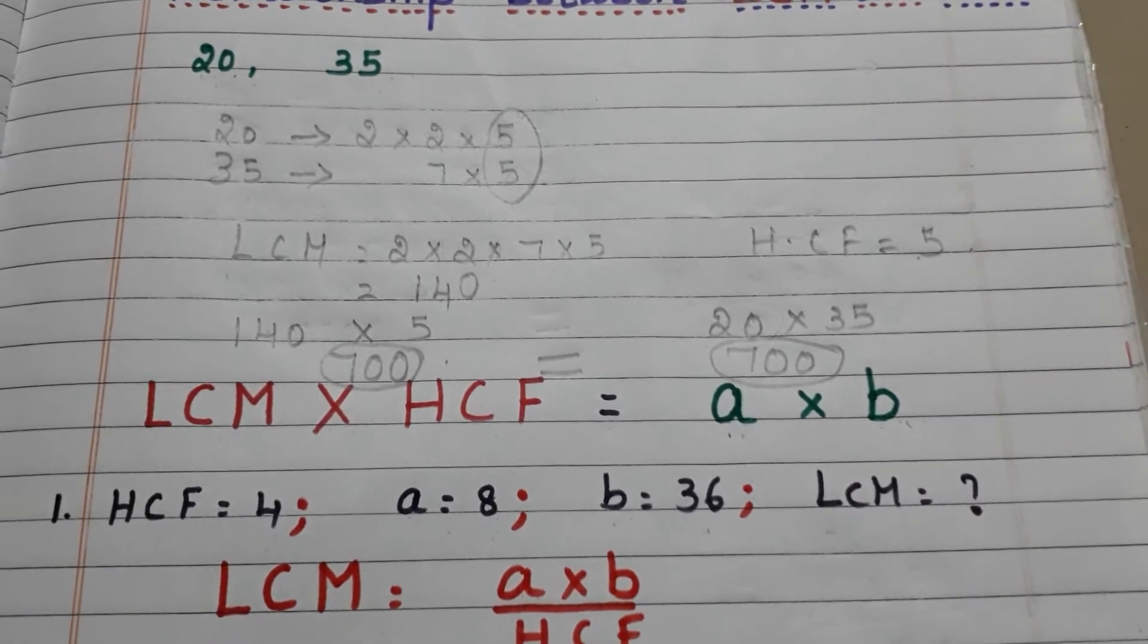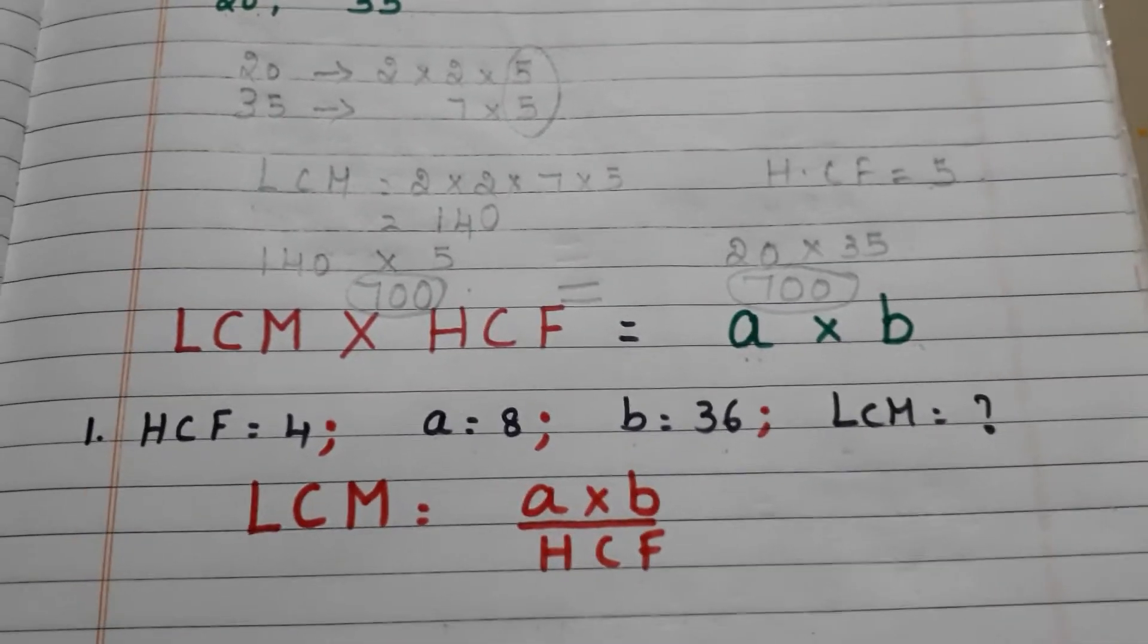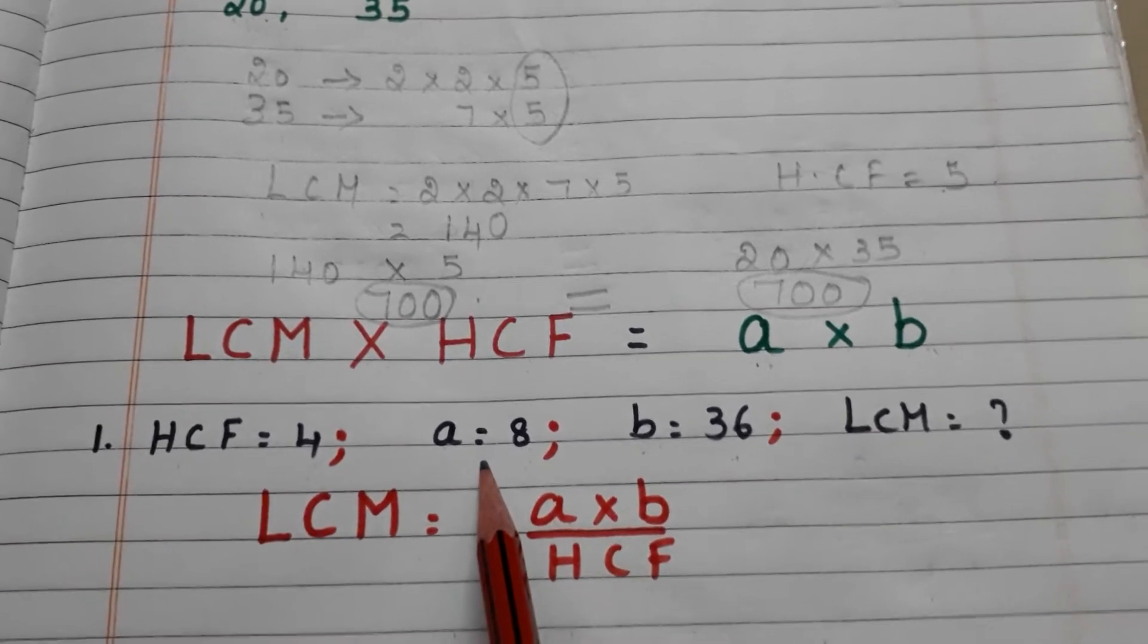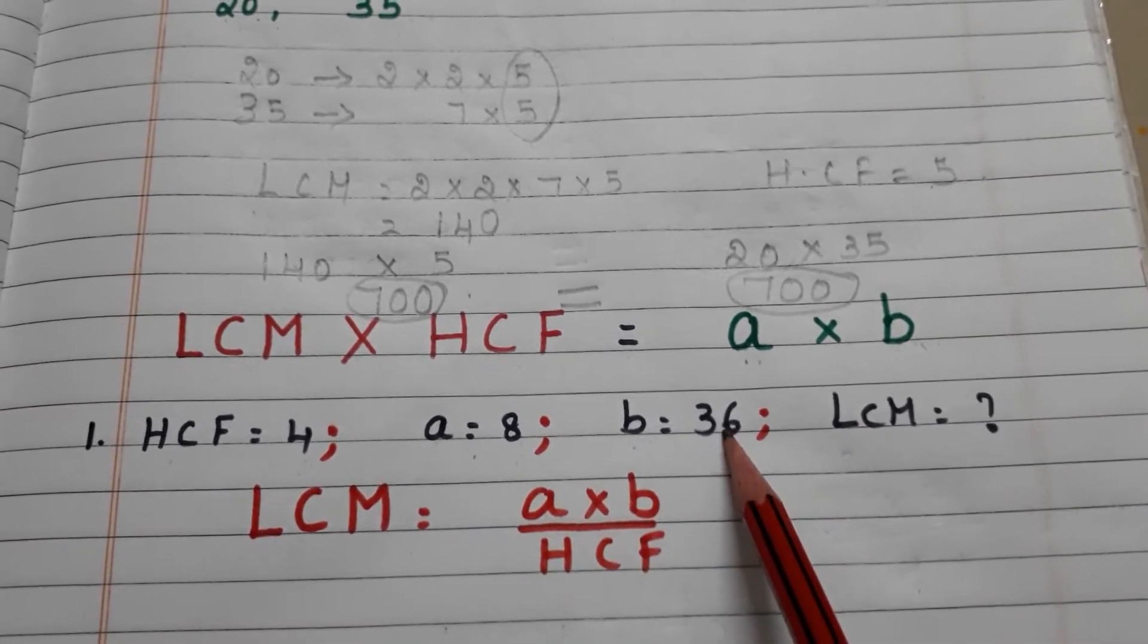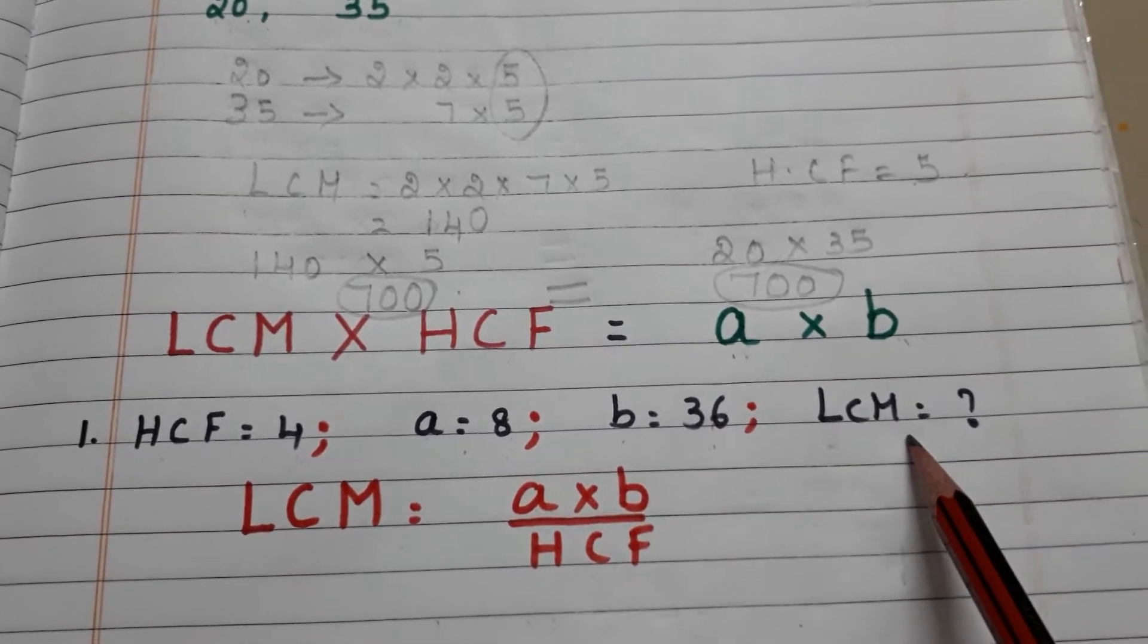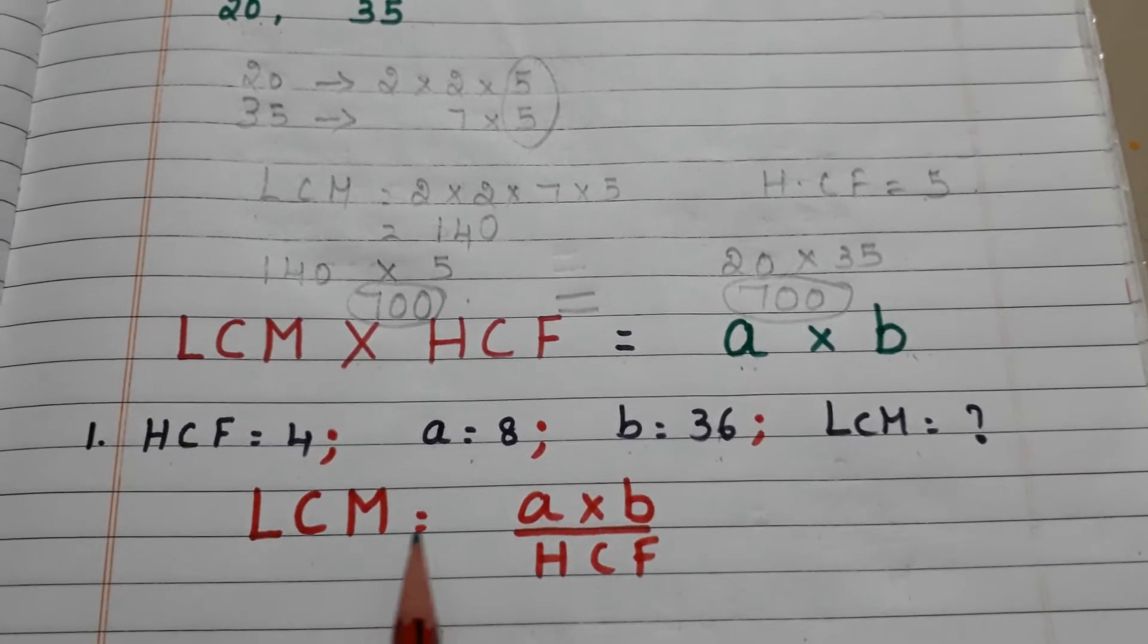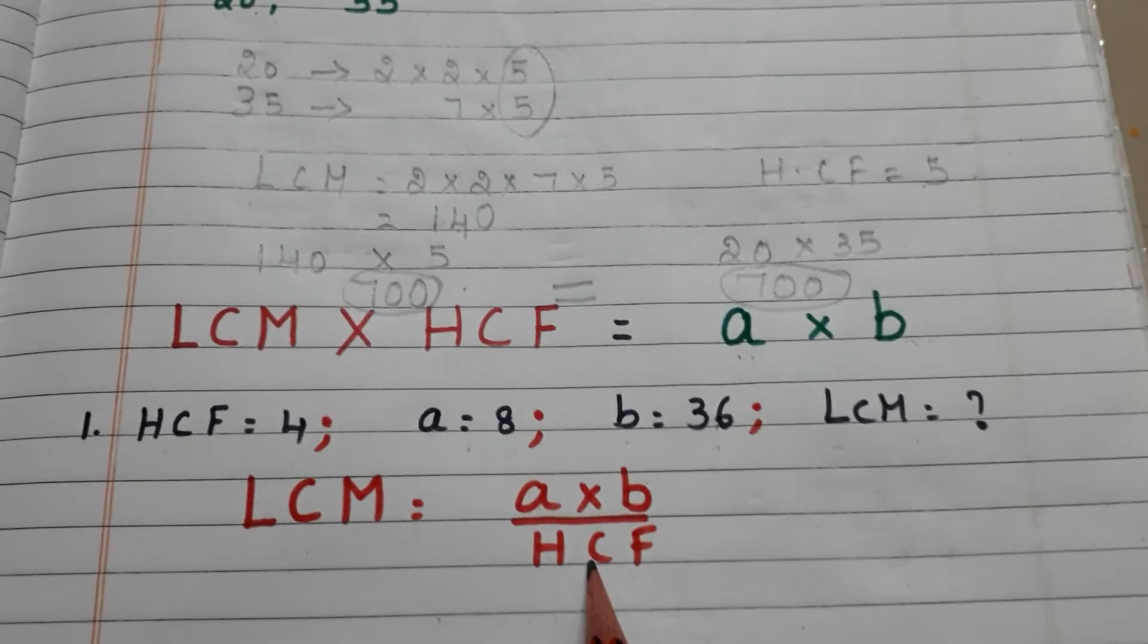Now let us see how to use this formula in different situations. In case 1, we have HCF equals 4, first number equals 8, second number equals 36, and we have to find the LCM. Now the formula becomes LCM equals a into b by HCF.